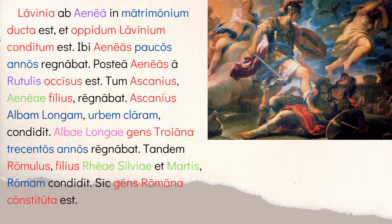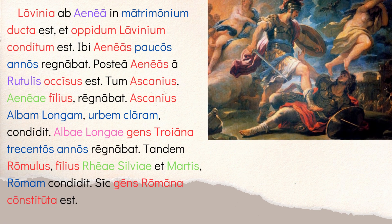'Lavinia ab Aenea in matrimonium ducta est et oppidum Lavinium conditum est' — Lavinia was led in marriage by Aeneas (perfect passive); she married Aeneas. And the town Lavinium was founded (conditum est, also perfect passive). Lavinium is Aeneas's famous city, named after his new wife. Then: 'Ibi Aeneas paucos annos regnabat' — there Aeneas was ruling for a few years. Paucos annos is accusative case expressing duration of time.